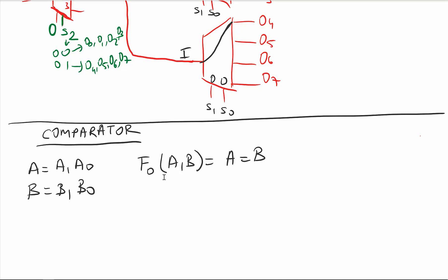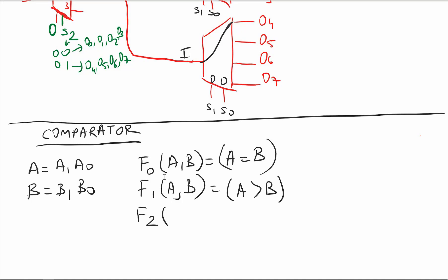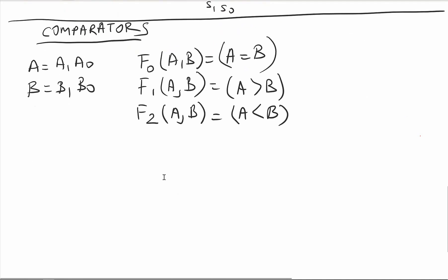The comparator can tell me if A is equal to B. Another comparator can tell me if A is bigger than B, and another function can tell me if B is bigger than A, or A is less than B. So these are the three functions that we need to implement in comparators.